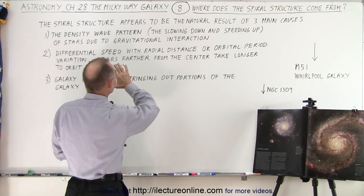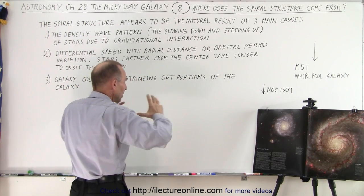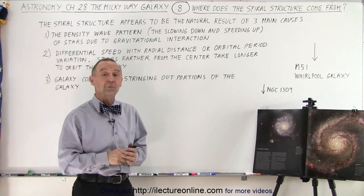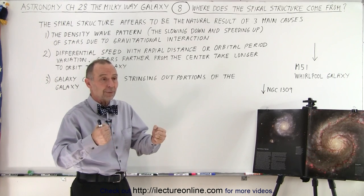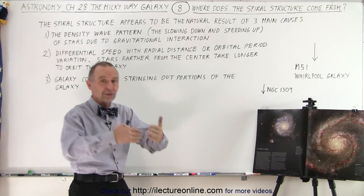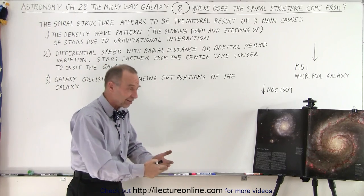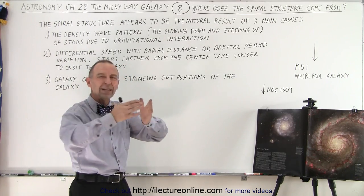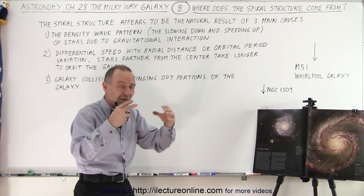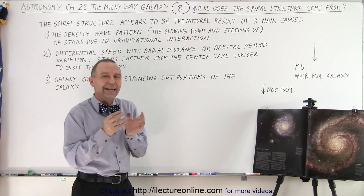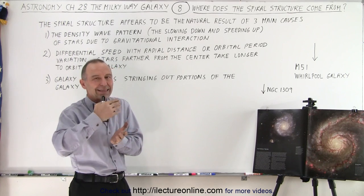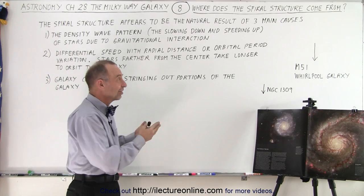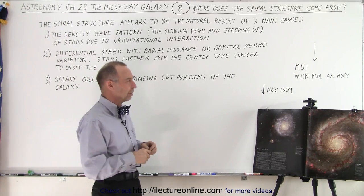So stars slowing down and speeding up causes things to bunch up. It's kind of like on the freeway in rush hour traffic — sometimes you're going 60 miles per hour, and in the next moment you're standing still. Then you're speeding up and standing still. We have these bunches where there's very few cars traveling fast, and bunches of cars traveling very slow or not at all. But in this case it's not because of the drivers' reactions — it's simply because of the gravitational pulling in different directions.